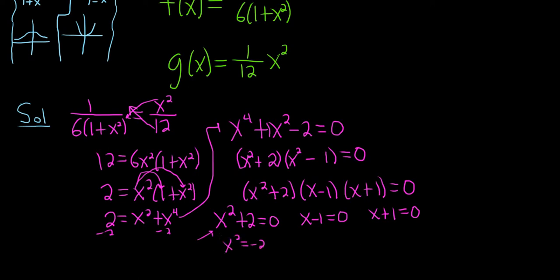This is impossible. There's no real solutions here. If you try to solve this, you would subtract the 2, take the square root of both sides, and that would give you imaginary numbers. So that's no good. So the two possible points of intersection are 1 and negative 1.